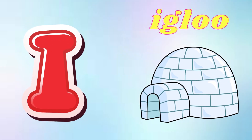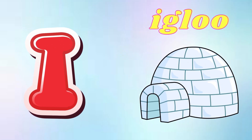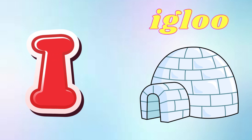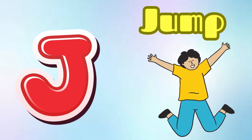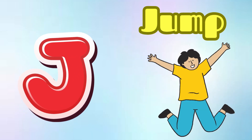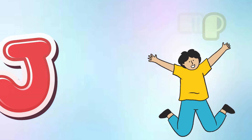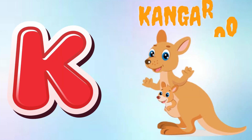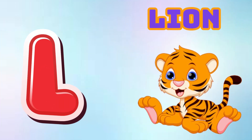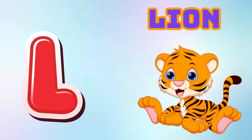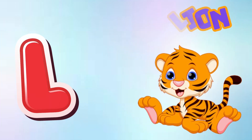I is for Igloo, I-I-Igloo. J is for Jump, J-J-Jump. K is for Kangaroo, K-K-Kangaroo. L is for Lion, L-L-Lion.